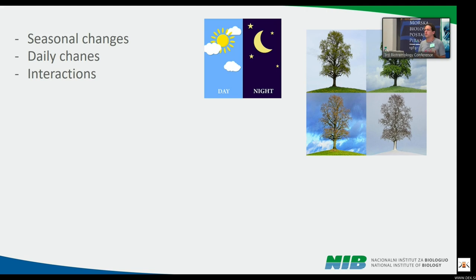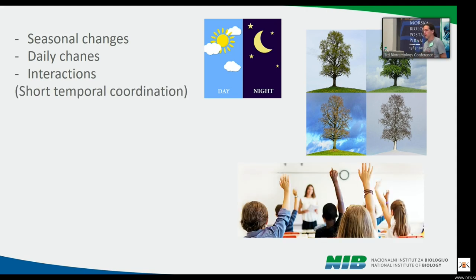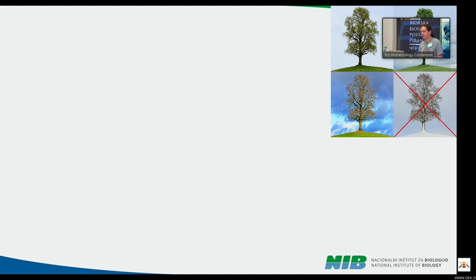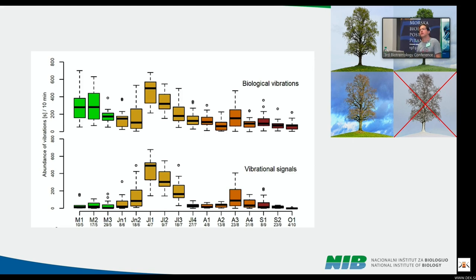We decided to look at several things: how things change over the season in a temperate climate, how things change over the day, and the interaction of individuals in this vibrational community — with short temporal coordination in mind. We stayed in the field from May until the beginning of October. The upper box plots show the abundance of biological vibrations, while the bottom shows vibrational signals only.